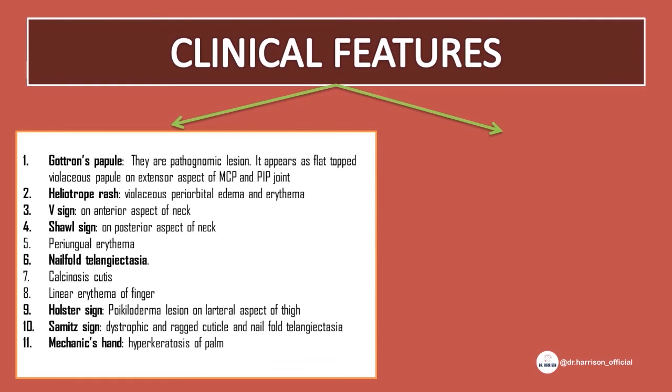8. Linear erythema of the finger. 9. Holster sign — papulodermal lesion on the lateral aspect of the thigh. 10. Samit sign — dystrophic and ragged cuticle and nailfold telangiectasia. 11. Mechanic's hand — hyperkeratosis of the palm.